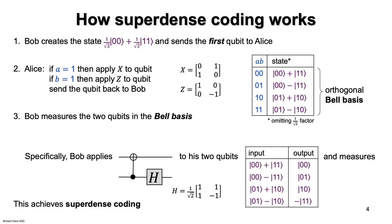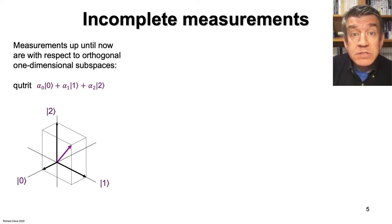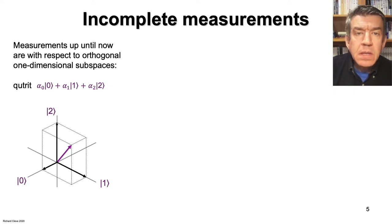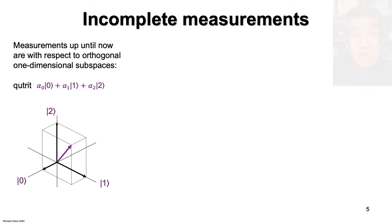What we are going to do next is further explore notions of measurement. First, I'd like to show you a more general notion of measurement than anything we've discussed so far, which is called an incomplete measurement. We need at least three-dimensional quantum state vectors to show this kind of measurement. We'll soon be talking about two-qubit systems whose state vectors are four-dimensional, but let me start with three-dimensional systems where the space is easier to visualize. For a quantum trit, or q-trit, there are three computational basis states called ket0, ket1, and ket2.